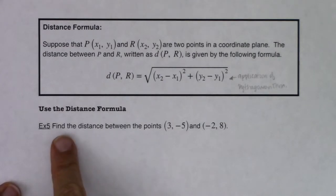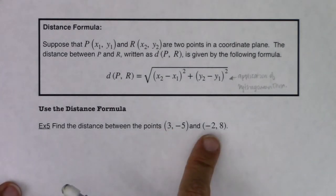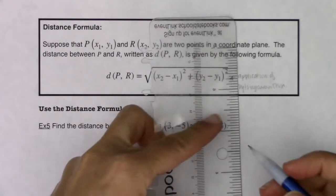Alright, but the directions here say find the distance between the points (3, -5) and (-2, 8). Now before we do that, I just want to do a quick little sketch of them to get some feels here.